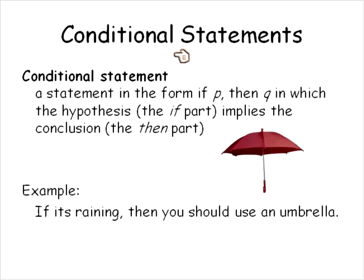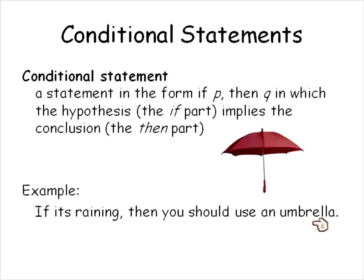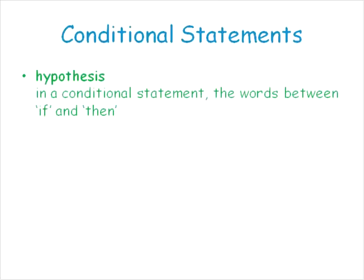A conditional statement is a statement in the form of 'if something, then something else' — in math terms, if P then Q — in which the hypothesis, the 'if' part, implies the conclusion, or the 'then' part. For example, if it's raining, then you should use an umbrella. The hypothesis should imply the conclusion.